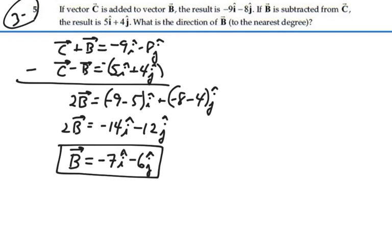The magnitude of this vector would be equal to the square root of the components squared added together, which equals 9.22. That's the magnitude of this vector.